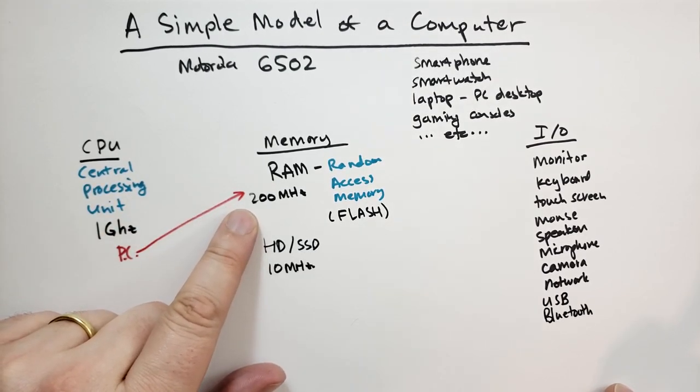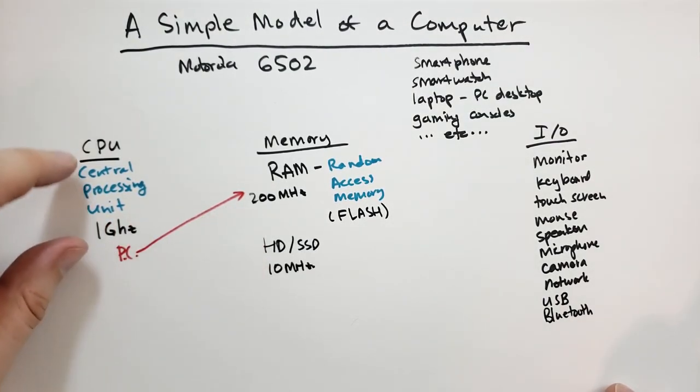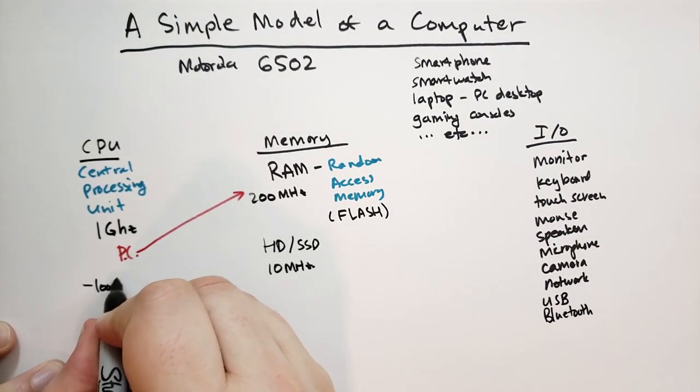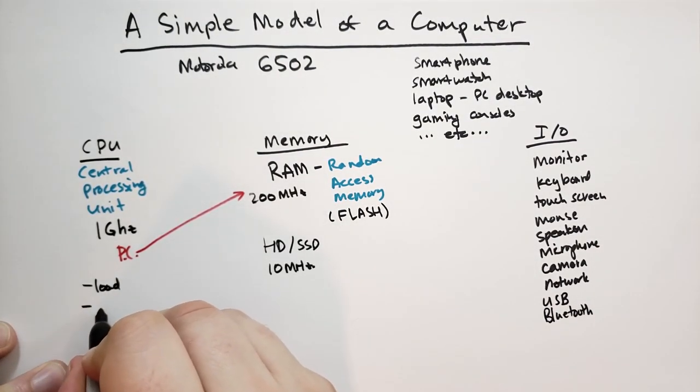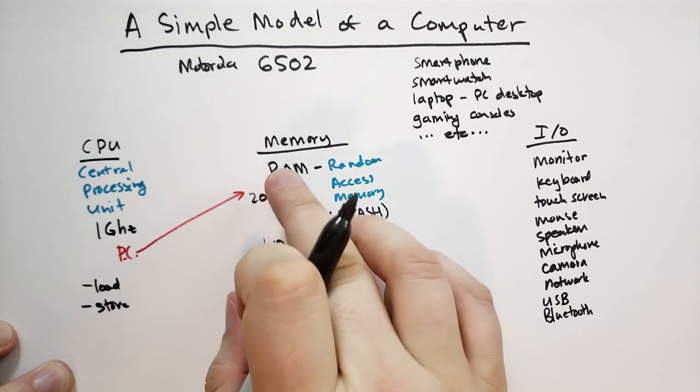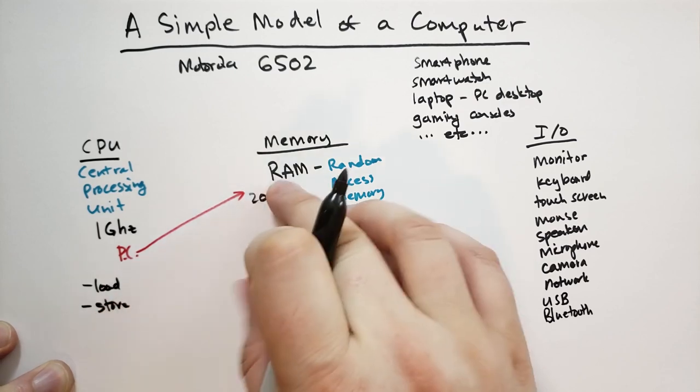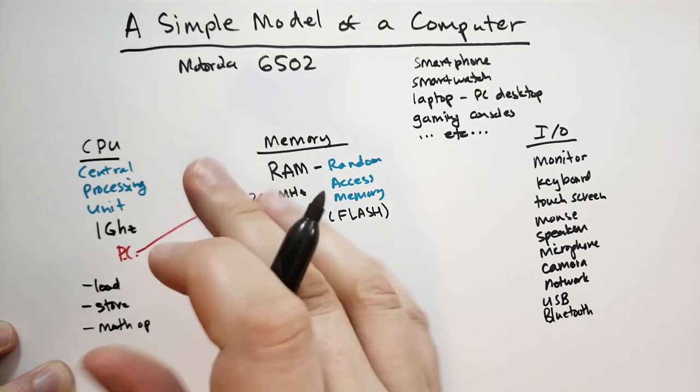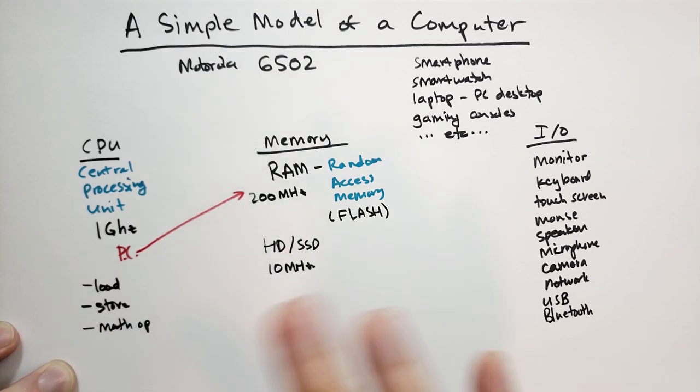And so the CPU looks at that location of memory, it runs that command, and the commands are basically one of several types. So the commands might be called instructions and they can be something like load into registers, they can be store from the register into memory. So basically take memory, put it into a register or store the register. And then there might be some kind of math op that you run between the registers, like add, subtract, multiply, divide, and stuff like that.